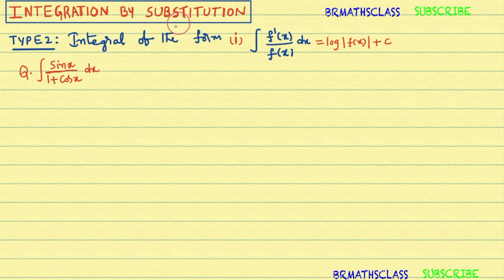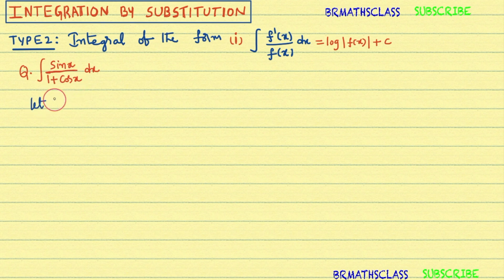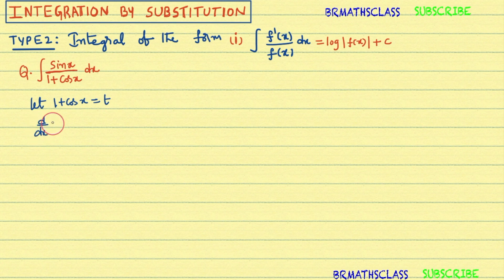At the end we'll see how to write the answer directly. First, I'll do this problem by the substitution method. In the substitution method, we consider some expression from the question as t. Here I'll consider 1 + cos x = t. Let 1 + cos x = t.